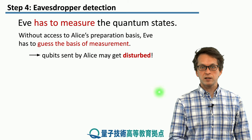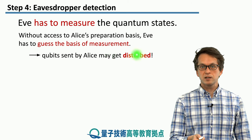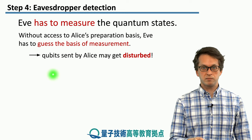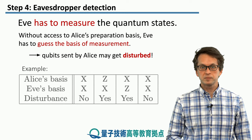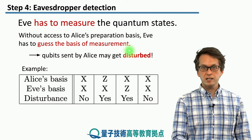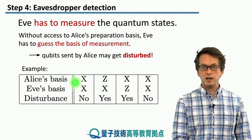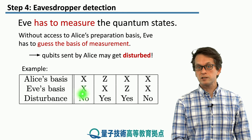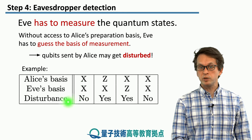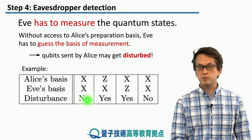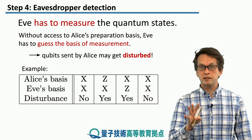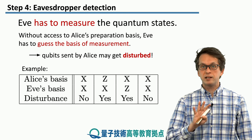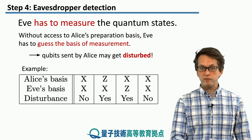If she measures in some basis, this has a chance to disturb the qubit. For example, if Alice prepares the qubit in the x basis and Eve measures in the x basis, then there is no disturbance. The qubit is still projected onto the same state that it was prepared in, so it doesn't change the state or the basis of the qubit.